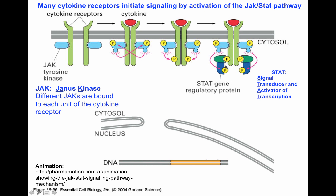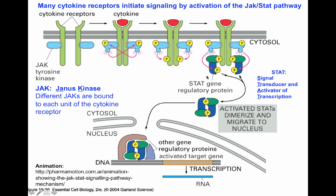Once the STATs are phosphorylated, they disassociate from the receptor and bind to one another through their SH2 domains — sort of like a yin-and-yang or Pisces motif, where the SH2 domain of one STAT binds to the phosphotyrosine of the other, and vice versa. This generates an active STAT dimer that is able to migrate to the nucleus and bind to the regulatory regions of a gene, allowing for initiation of transcription. Here on the left, there is a small animation movie that shows how the JAK-STAT signaling pathway mechanism works.